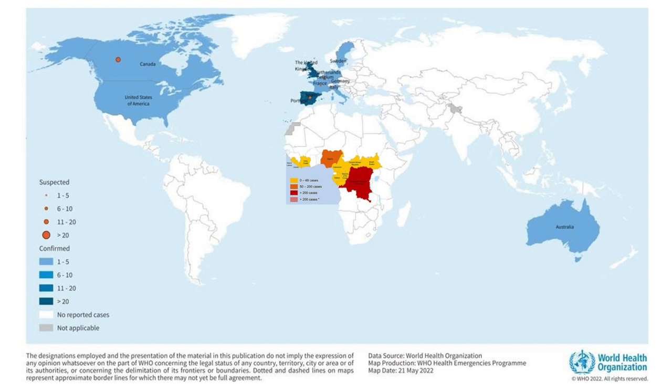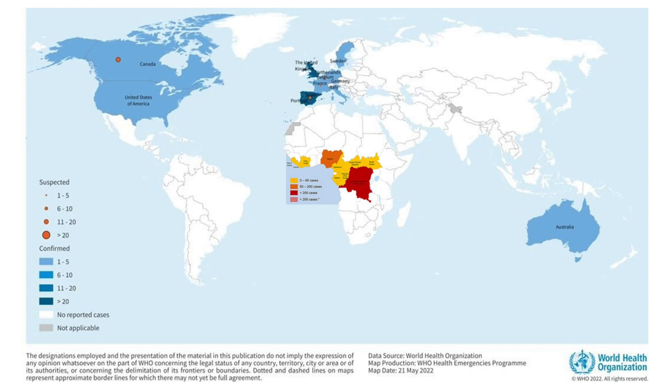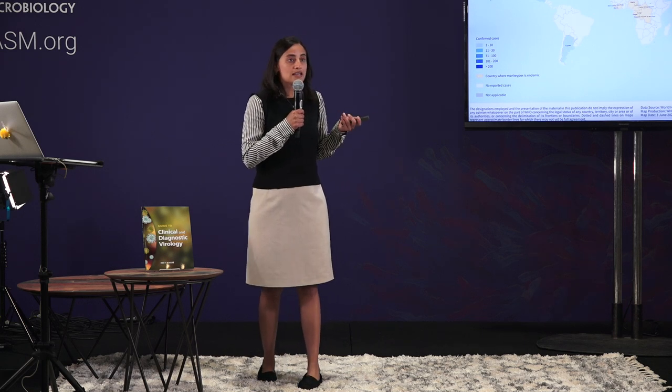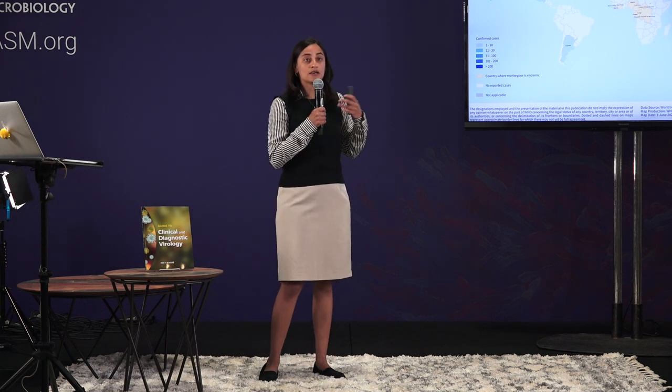When those prairie dogs were sold as pets, monkeypox was transmitted to humans through bites, handling, or even just cleaning the bedding and cages of the animals. In the 2003 outbreak, none of the cases had been attributed to human-to-human transmission. But then on May 7th of this year, the WHO started reporting the spread of monkeypox in non-endemic countries. To date, there have been more than a thousand cases in almost 30 countries. A lot of the individuals in this outbreak haven't had travel exposure, so there really is a human-to-human transmission element.